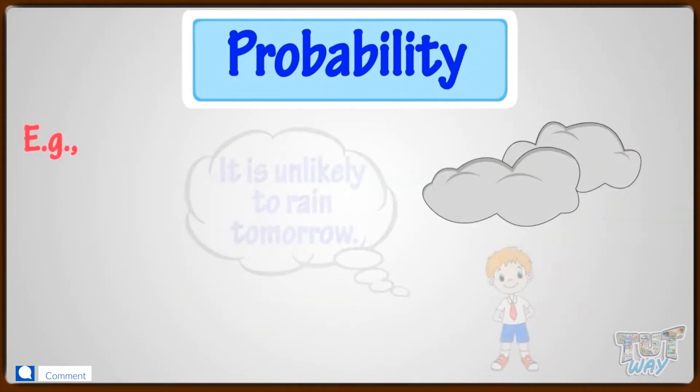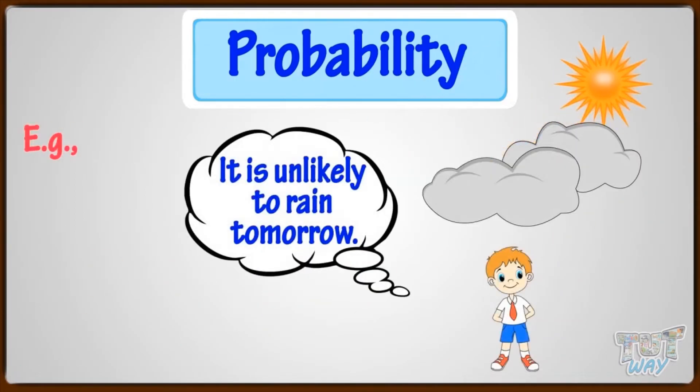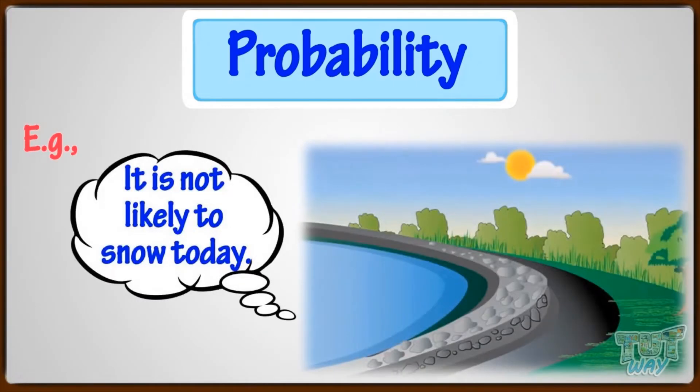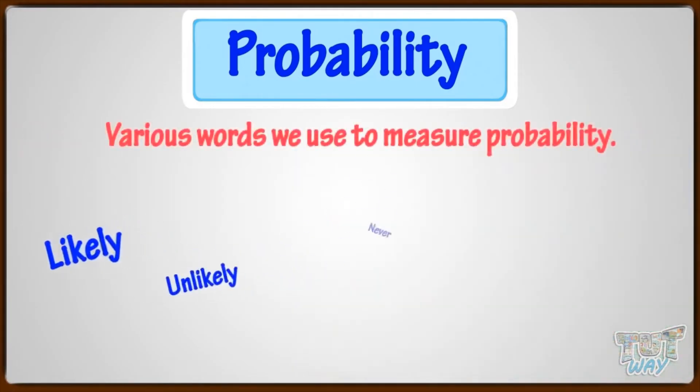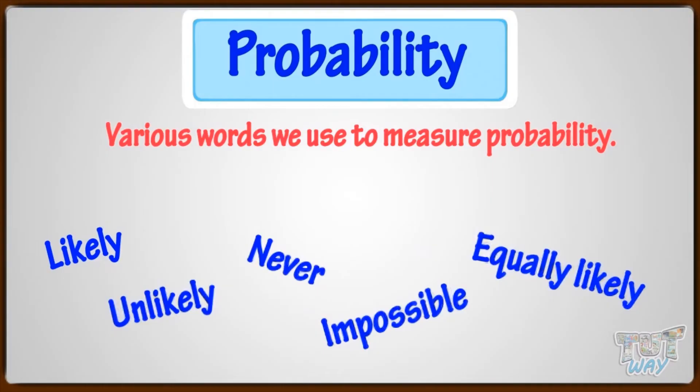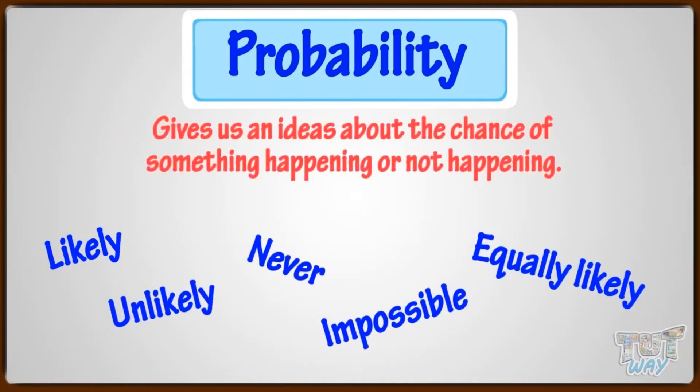Example: It is unlikely to rain tomorrow, or it is not likely to snow today. So, various words we use to measure probability give us an idea about the chance of something happening or not happening.